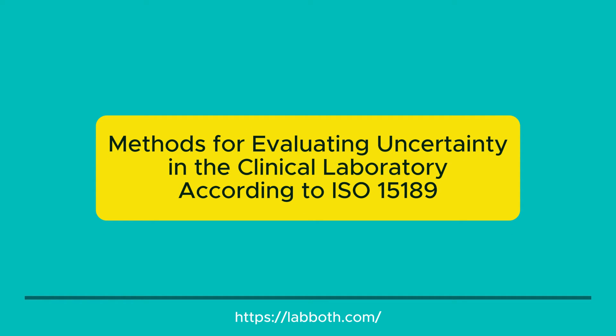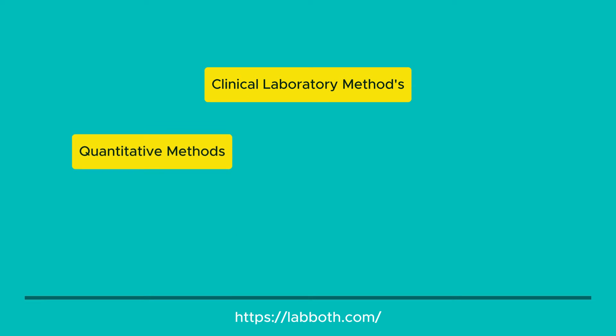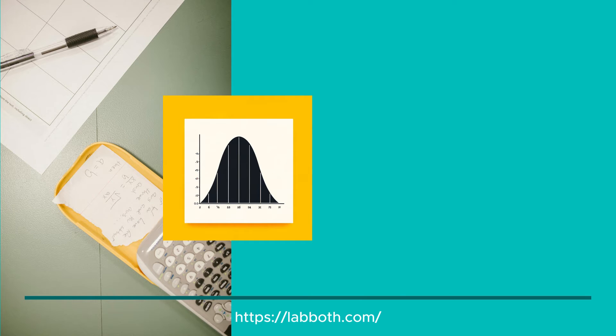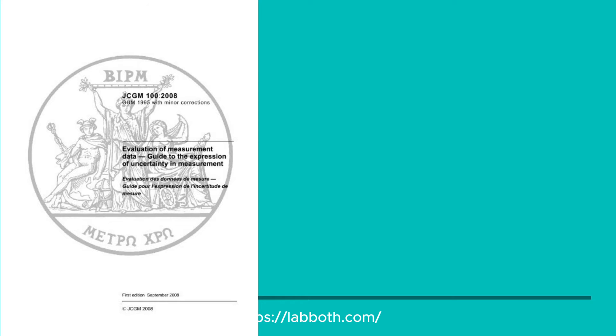Methods for evaluating uncertainty in the clinical laboratory according to ISO 15189. In the clinical laboratory, there are two general groups of methods: quantitative methods and qualitative methods, each with a distinct approach to estimating uncertainty. We will first explain the uncertainty estimation approach for quantitative methods, or the GUM method, and then the approach for qualitative methods, based on Bayes' theorem. The estimation of uncertainty for quantitative methods is achieved by implementing the protocol given in the GUM Guide — Guide to the Expression of Uncertainty.